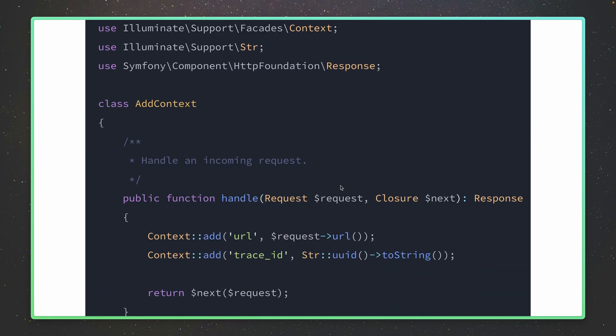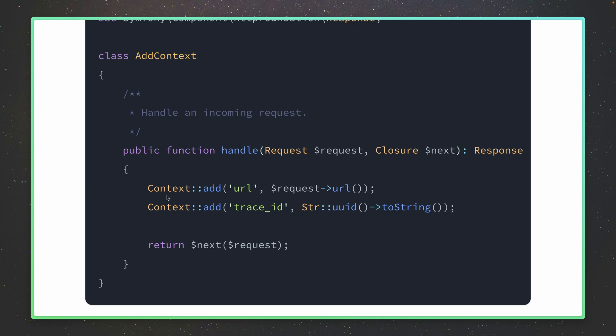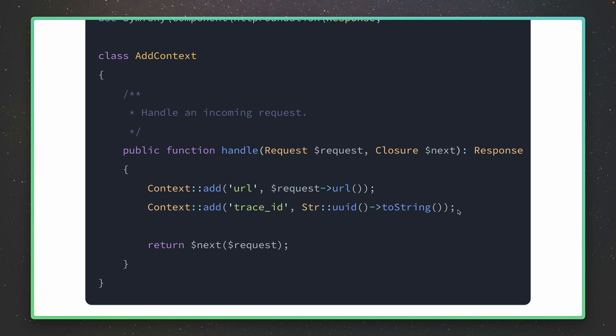Context — mostly you will use it inside a middleware like here, and you can add something to the current context. For example, the URL the user used to enter the application, so this request was triggered by this URL, and then wherever in your application you check the URL inside the context you would see which URL triggered it. The same applies to creating some kind of unique trace ID — for every log message you send, you will see the context as well, so for a bunch of things happening inside your application you now know this was connected to this trace ID, which we are setting here at the beginning of the request in this middleware.